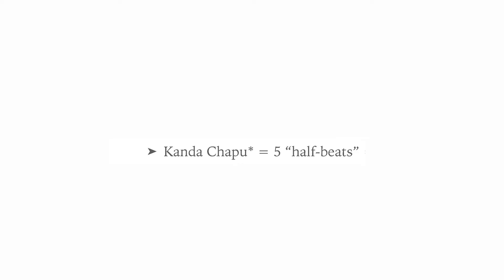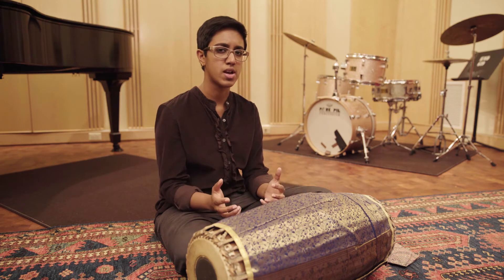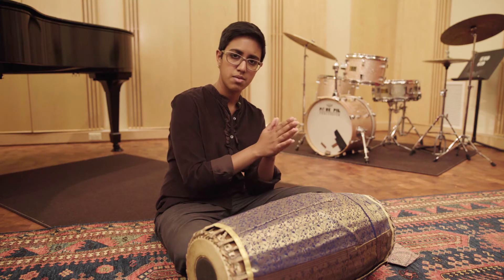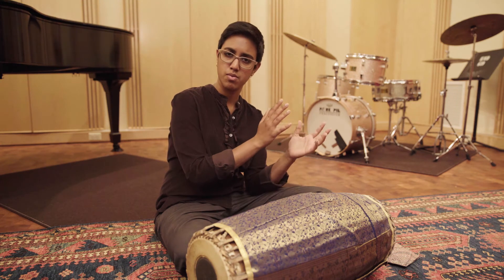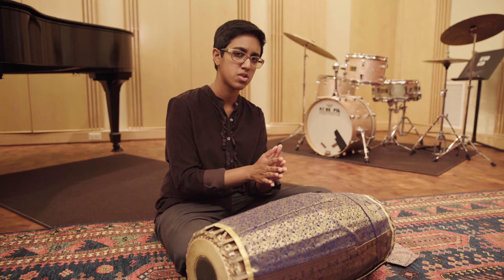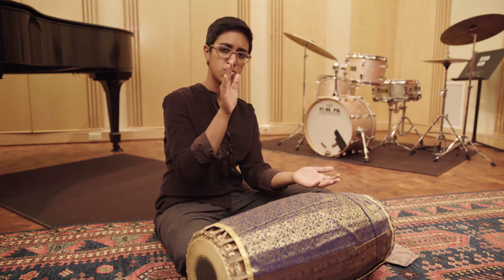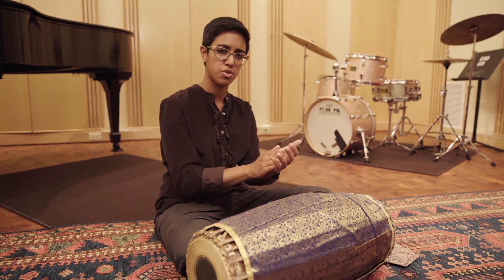The next time cycle is Kanda Chapa, a five-component thala. We can think of this thala as five, or we can think of it as two and a half — five divided by two is two and a half. If we think of it as composed of half beats — five half beats, which is how it's usually thought of — then we have a half, then one whole, then one whole, so half plus two is two and a half. One, two, three, four, five. One, two, three, four, five.